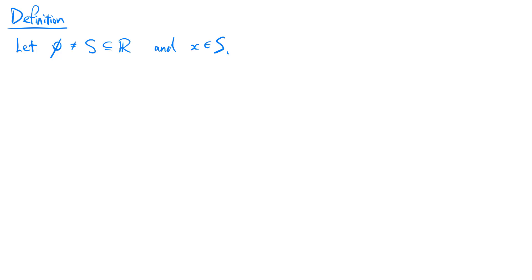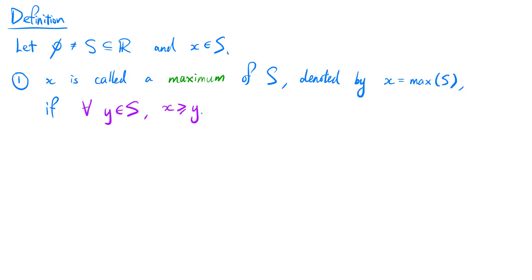Let s be a non-empty subset of the real numbers, and x be an element in s. x is called a maximum of s, denoted by x equals max(s), if for all elements y in s, x is greater than or equal to y.